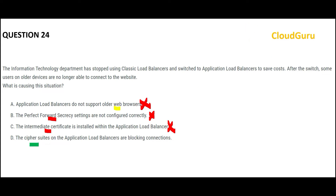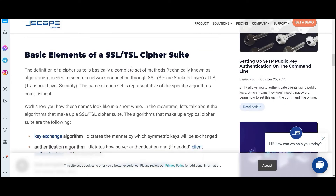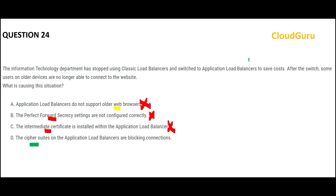The remaining option is cipher suites. Cipher suites are also linked with encryption via the TLS protocol, but more broadly, a cipher suite is a complete set of methods used to secure a network connection through SSL. So we are not talking about only encryption — it is about securing a network connection itself. The network connection is not being established, which is why you are not able to connect to the website. That is why D is the final answer.